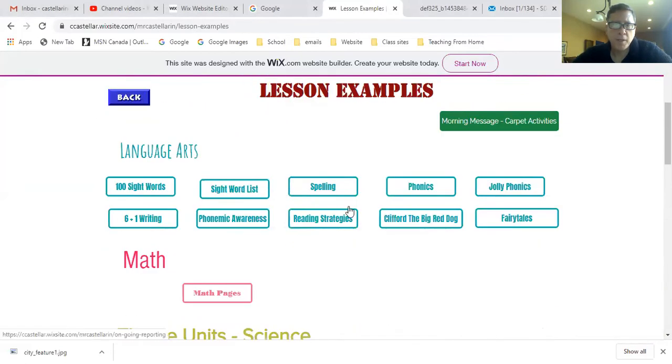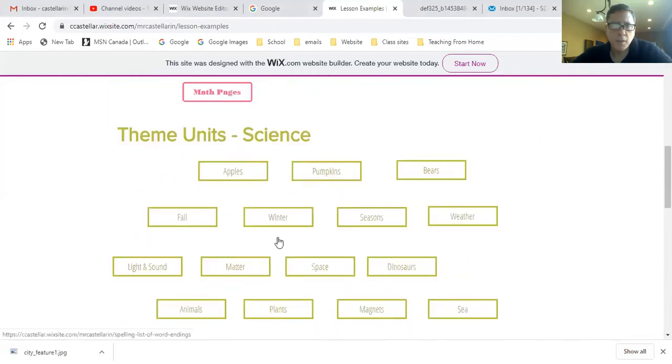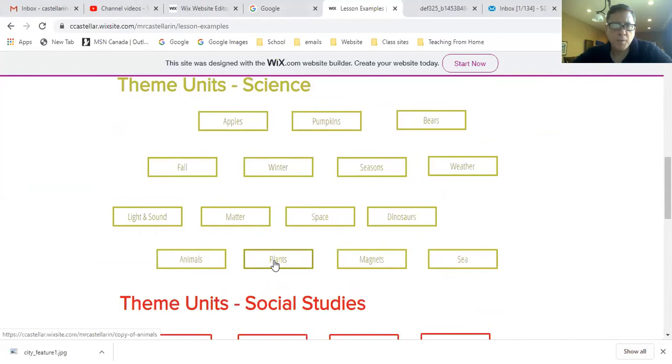And when we slide down, language arts, math, here we go, theme units for science, and at the bottom there's a box for plants. We'll click on that one.